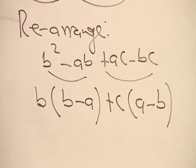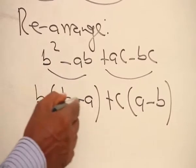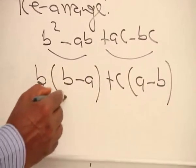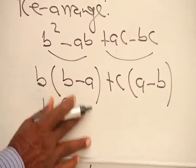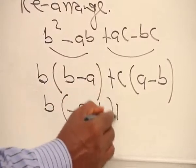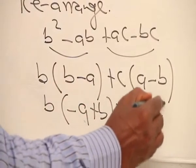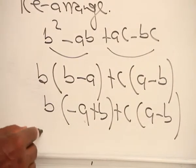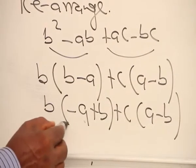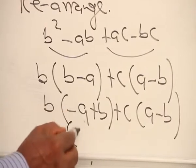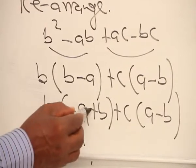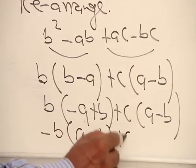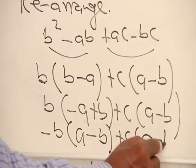Now watch this expression, just like the previous one. This is b minus a, this is a minus b. So we can write this as b into minus a plus b, plus c into a minus b. I want to bring this minus out, so it will become minus b. And then I'll write a here. Minus and plus here will become a minus, and then this is b, and then plus c into a minus b.